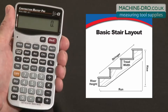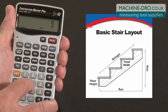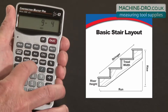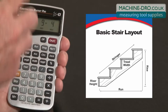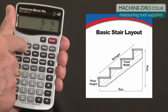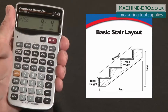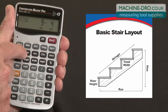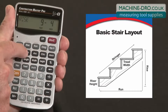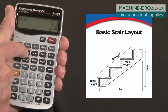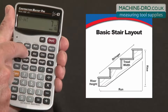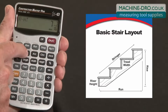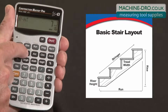Now we just put in our floor-to-floor drop. Say we've got a 9 foot 4 inch rise, or floor-to-floor rise — I'm going to hit Rise. Now I just press the Stair key and it'll give us a whole series of answers.